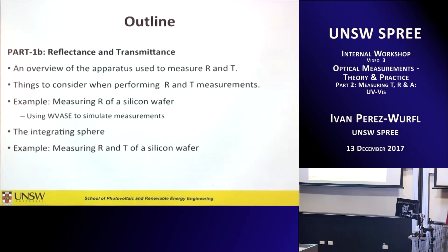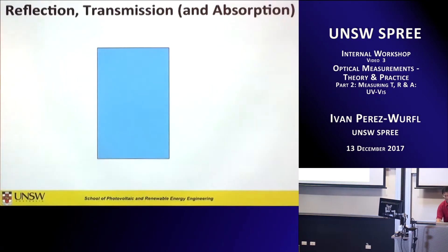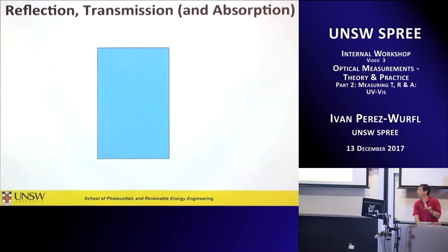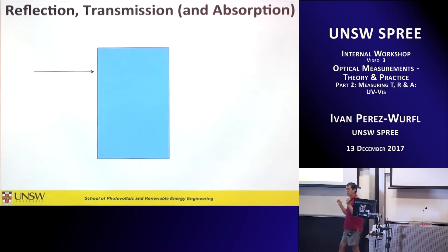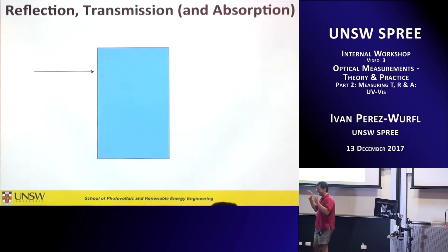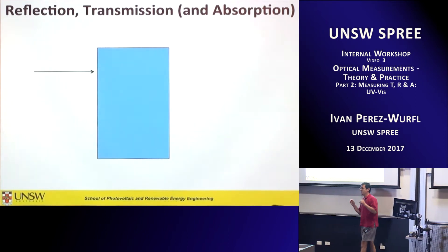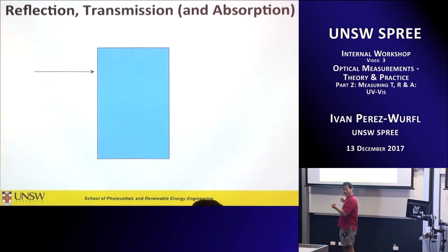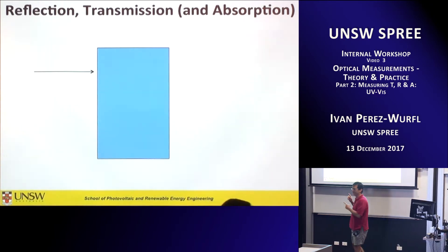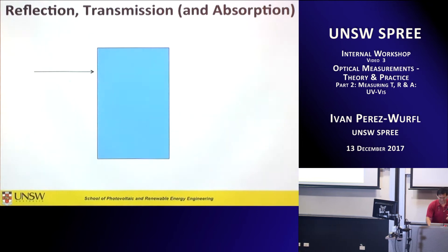Let me get started. Ned already talked about this — basically the slab that you're usually starting with when thinking about reflection and transmission. It's a very nice slab, and without really realizing it, you're saying it's a mirror on both sides. Because it's a mirror, everything's nice and easy.